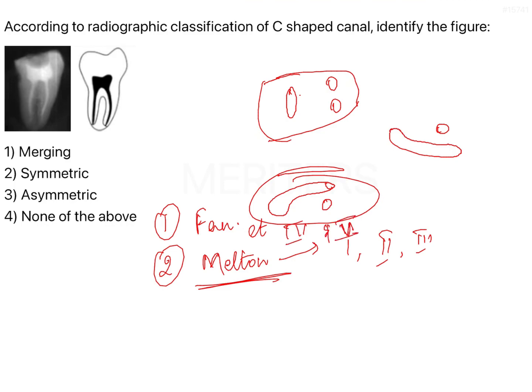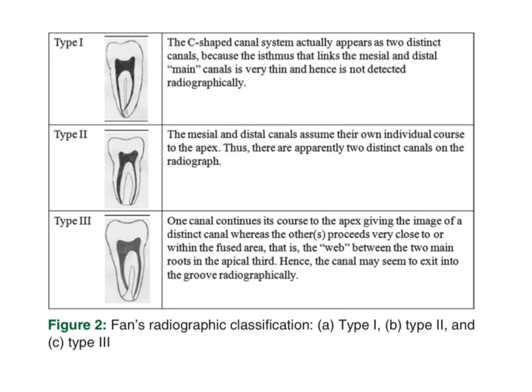Fan also gave the radiographic classification of C-shaped canals so that when you see a radiograph, you can easily identify how a C-shaped canal looks. Based on that, Fan et al. gave three types of radiographic classification of C-shaped canals.